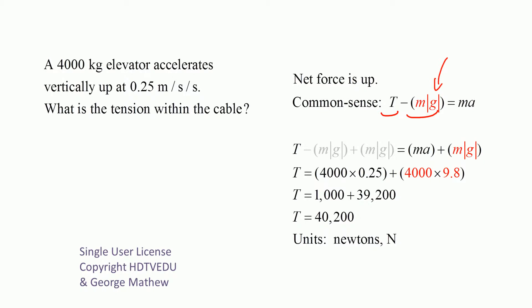So what do we do? Add mg to both sides. We get mass times acceleration plus mg. What is the mass? 4,000. What is the acceleration? 0.25. What is the mass? 4,000. What is g? 9.8.